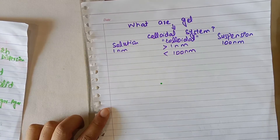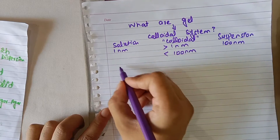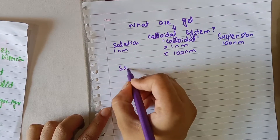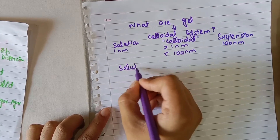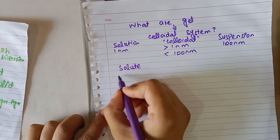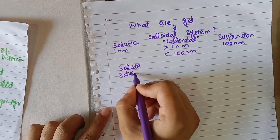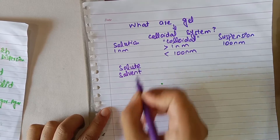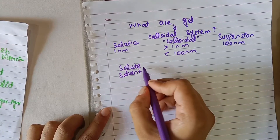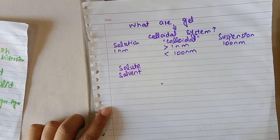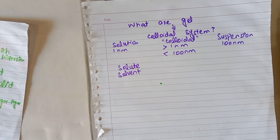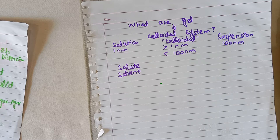Similarly, just as solutions are constituted of two basic components — one is solute and another is solvent — solutes are basically the particles that are present in small concentration, while solvents are the particles present in large concentration.